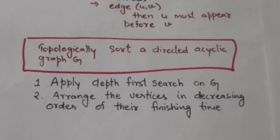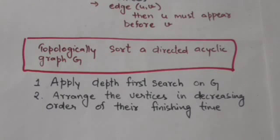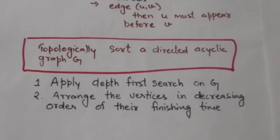Suppose we have to topologically sort a directed acyclic graph G. First we will apply the depth first search algorithm on graph G and find the finishing time of each vertex. Then we will arrange the vertices of graph G in decreasing order of their finishing time.